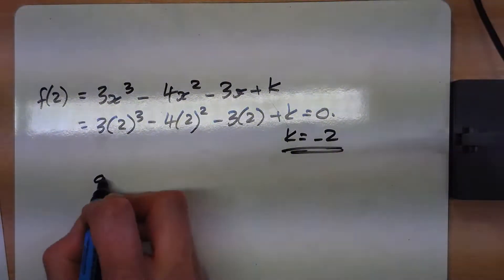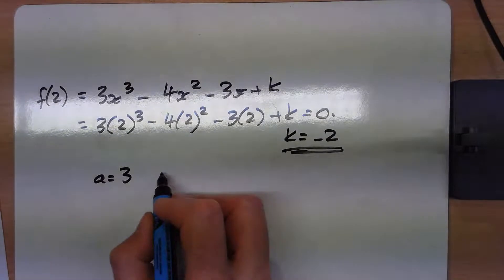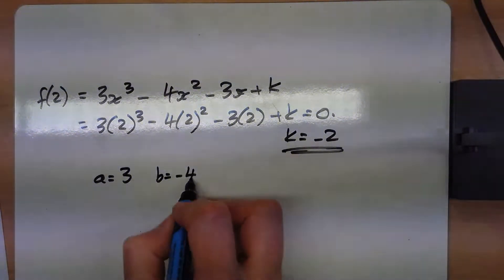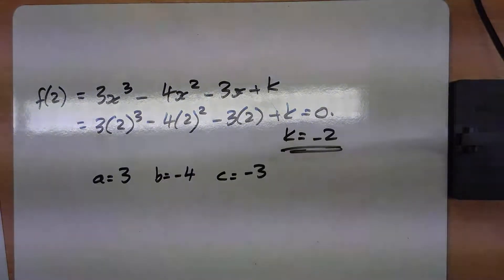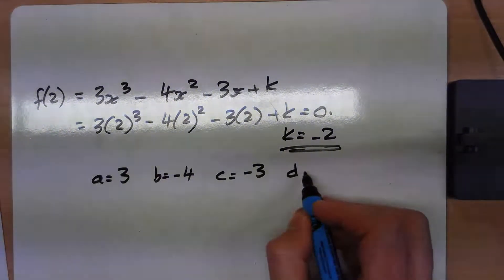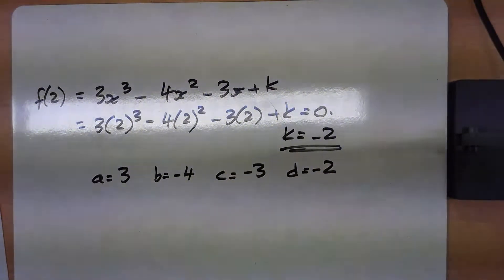So our a value, the number of x cubes, is 3, our b value, the number of x squareds, is minus 4, our c value is the number of x's, is 3, and our d value is the number on the end, minus 2.